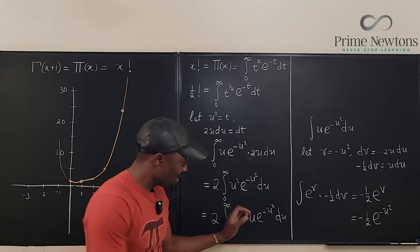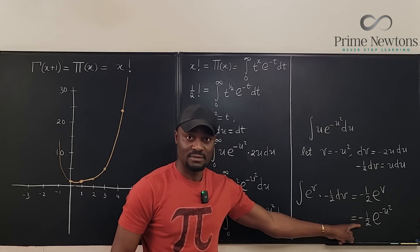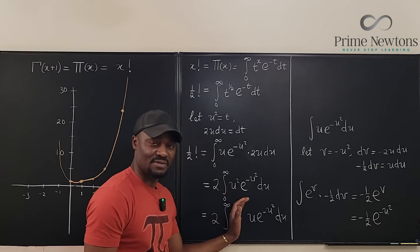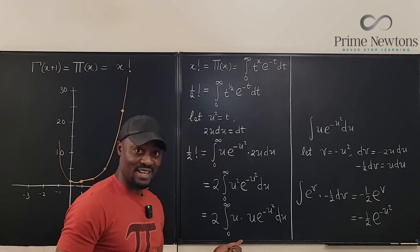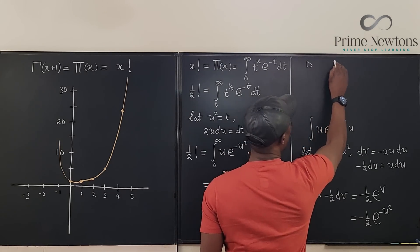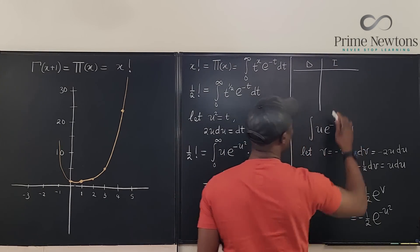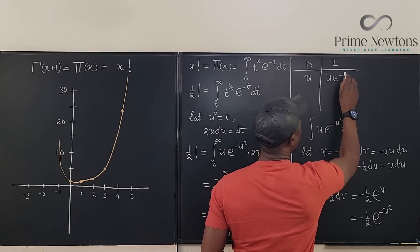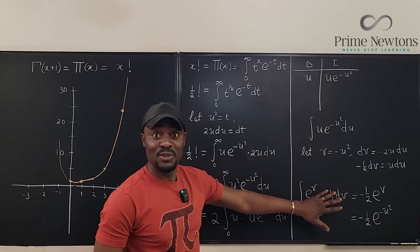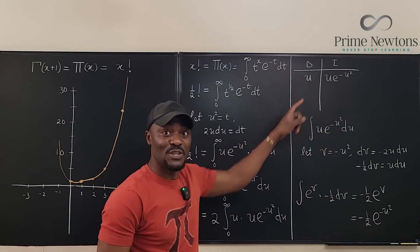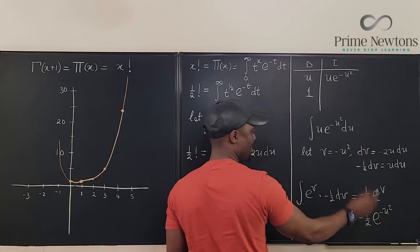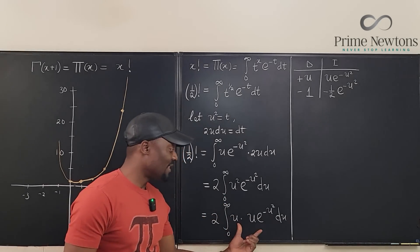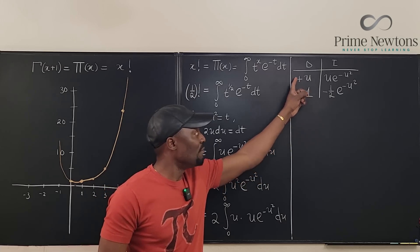So when u e to the negative u squared is integrated, we get negative one-half e to the negative u squared. Using the DI method table: we differentiate u to get one, and we integrate u e to the negative u squared to get negative one-half e to the negative u squared. Then we multiply diagonally across the table and include the integral of the remaining row.